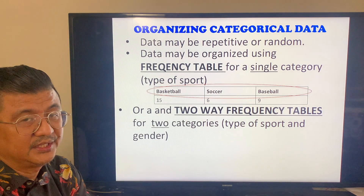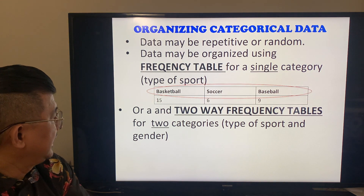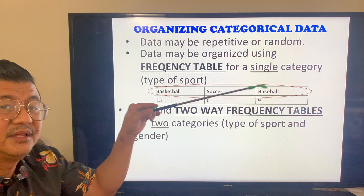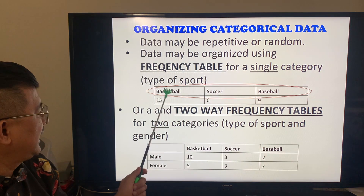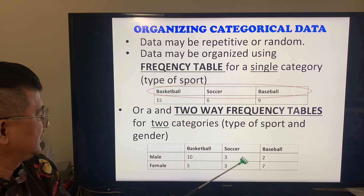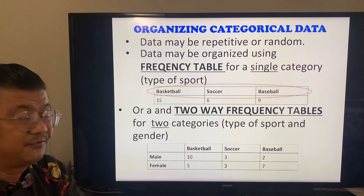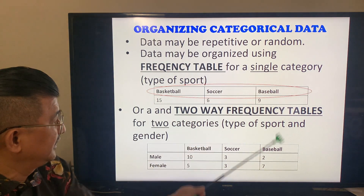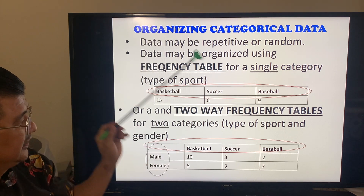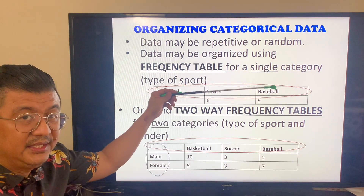But there is another way you could write a table — this is a two-way frequency table. Based on the results of the sports, I now make another category, which is gender. Out of those 15, 10 are male and 5 are female. Out of those 6, 3 are male and 3 are female. Out of those 9, 2 are male and 7 are female.